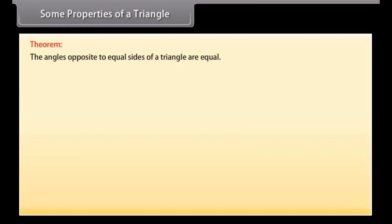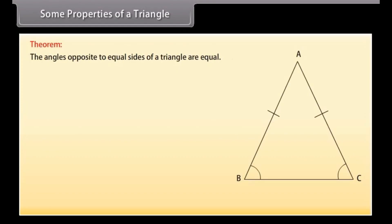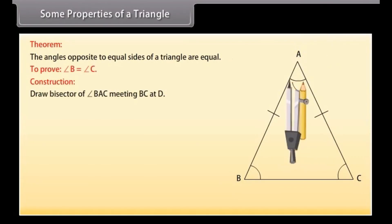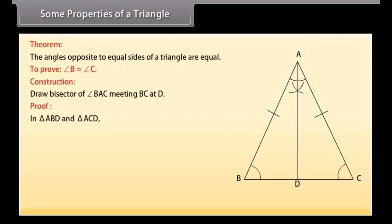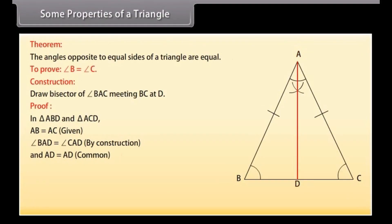Theorem: The angles opposite to equal sides of a triangle are equal. Let's prove it. Given is triangle ABC in which AB is equal to AC. We have to prove that angle B is equal to angle C. Construction: draw the bisector of angle BAC meeting BC at D. Proof: in triangle ABD and triangle ACD, AB is equal to AC (given), angle BAD is equal to angle CAD (by construction), and AD is equal to AD (common). Therefore, by SAS rule, triangle ABD is congruent to triangle ACD. Hence, angle B is equal to angle C.